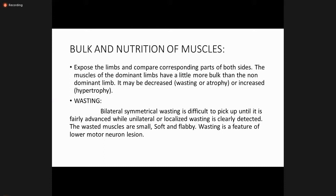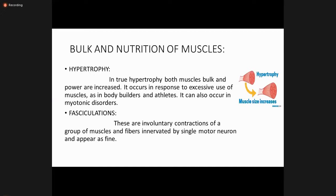If you find wasting, you should explain it to your examiner. Regarding hypertrophy, both muscle bulk and power are increased. It occurs in response to excessive use of muscles, as in bodybuilders and athletes, and can also occur in myotonic disorders. In hypertrophic muscles the bulk mass increases — for example, a bodybuilder's biceps and pectoral muscles are prominent compared to normal due to exercise.